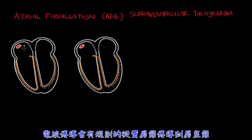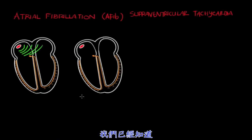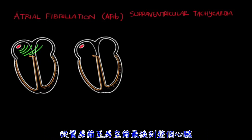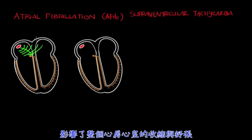In a normal heart, electrical wavelets are conducted from the SA node to the AV node in an organized fashion. And since you have organized conduction going from the SA node to the AV node, you're going to get concentric or unified contraction of the atrial tissue.